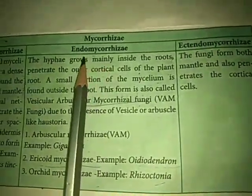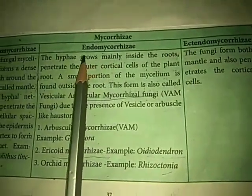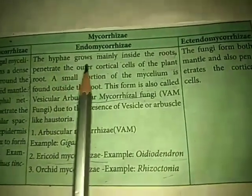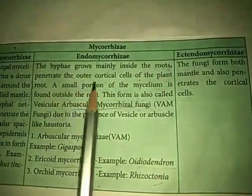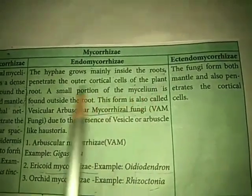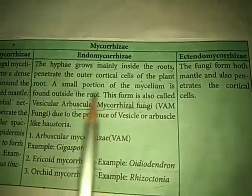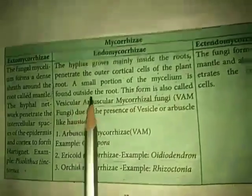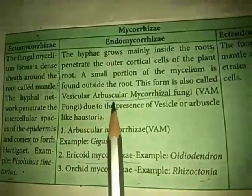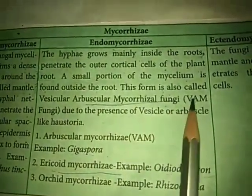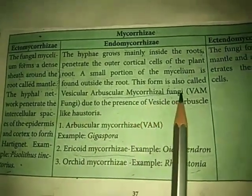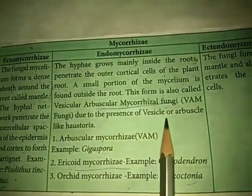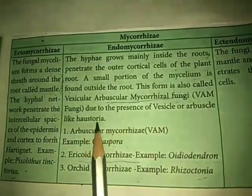The second type is endomycorrhizae. In endomycorrhizae, the hyphal growth occurs mainly inside the roots; the hyphae penetrate the outer cortical cells of the plant root, and only a small portion of the mycelium is found outside. This form is also called vesicular arbuscular mycorrhizae fungi, or VAM — vesicular arbuscular mycorrhizal fungi — due to the presence of vesicles or arbuscular-like structures.